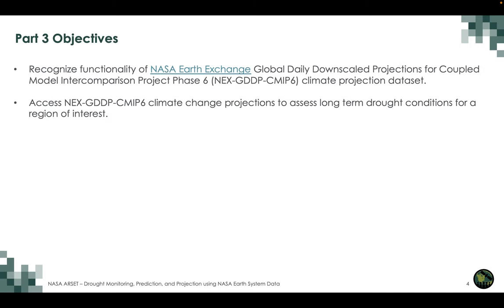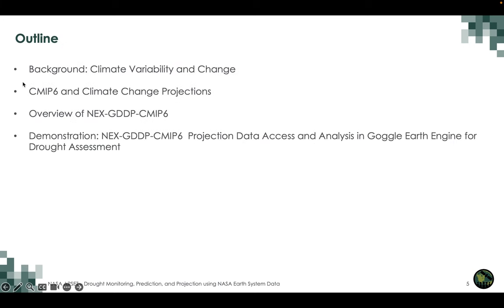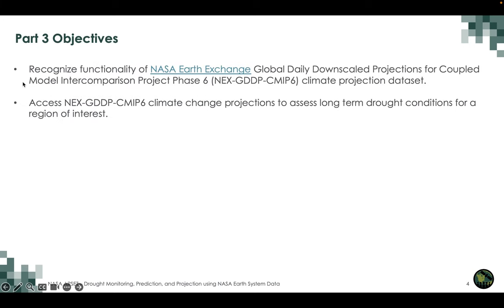Specific objectives for today are to recognize the functionality of the NEX-GDDP-CMIP6 climate projection dataset, which stands for NASA Earth Exchange Global Daily Downscaled Projections for Coupled Model Intercomparison Project Phase 6. We will also access NEX-GDDP-CMIP6 climate change projections to assess long-term drought conditions for a region of interest.